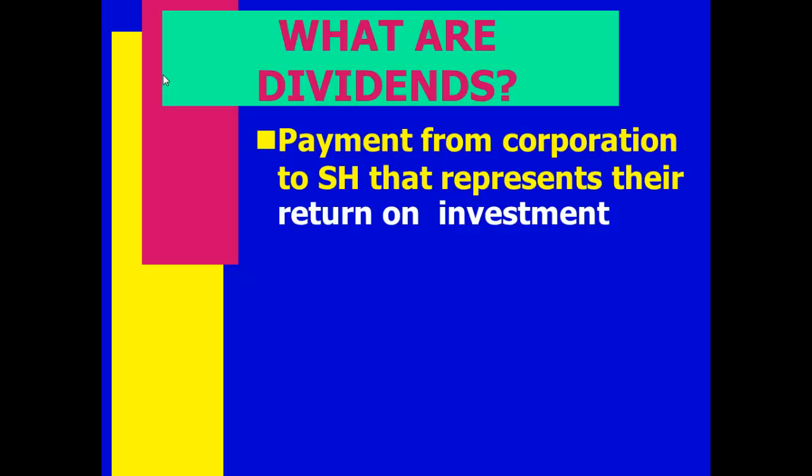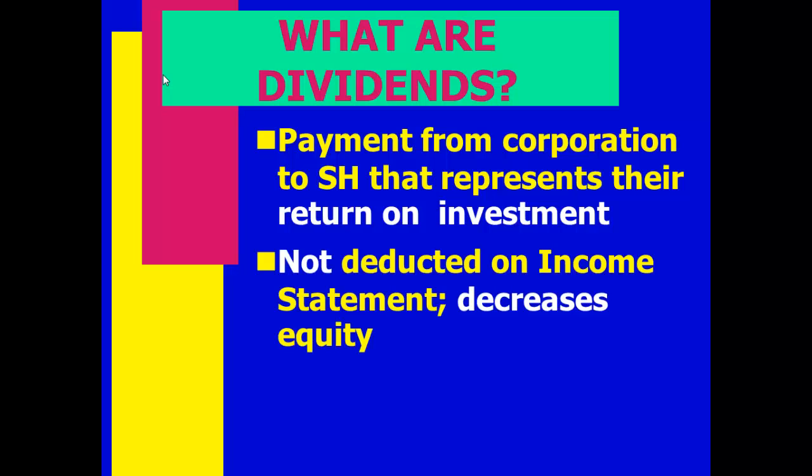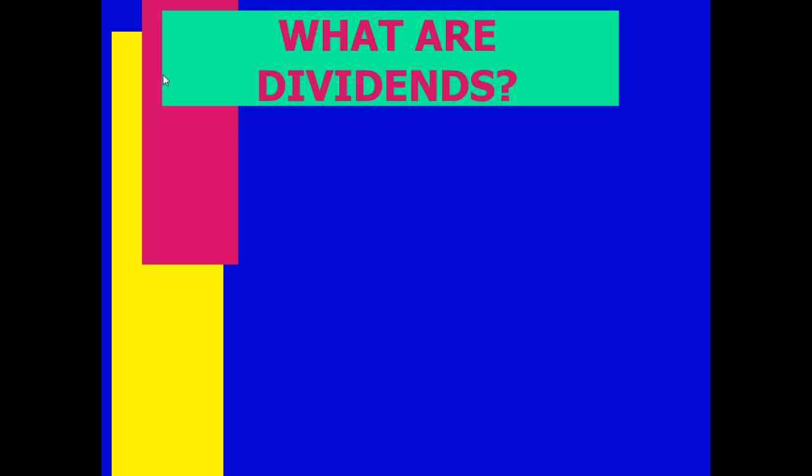A dividend is when a corporation takes some of its earnings and gives it back to shareholders as a return on their investment. It is not an expense, it doesn't go in the income statement. Instead, it goes in the retained earnings statement and it makes retained earnings go down.